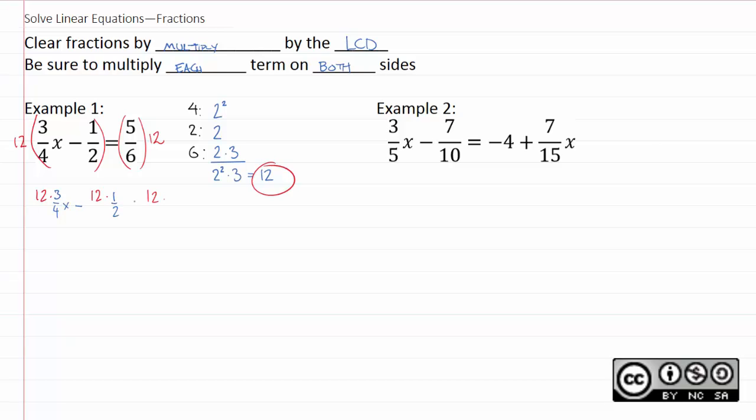Now, there are a couple different ways to do this. What I find works best for me is to simplify as I go. Remember, this is considered twelve over one all the way across. So you can divide twelve by four and get three over one.